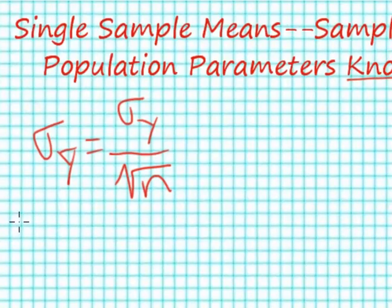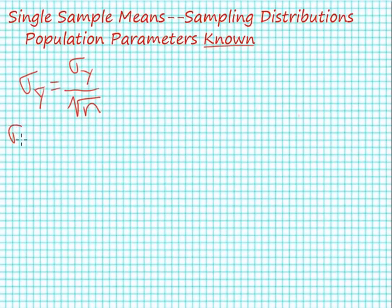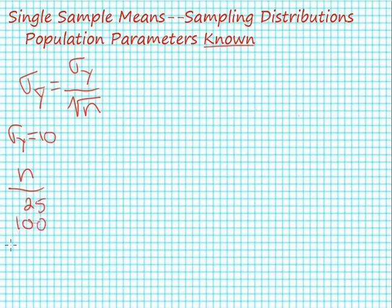For this problem, I'm going to assume that sigma sub y is equal to 10, just to pick a number. Of course, this would be a number you would derive from your actual data. And we're going to use different sample sizes: 25, 100, 400, and 1,600.